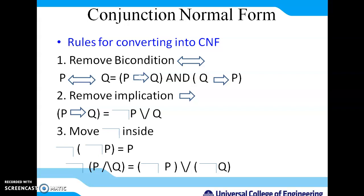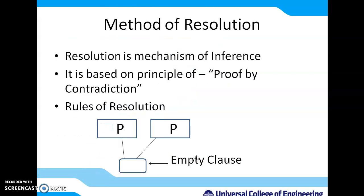Before proving a fact with the help of resolution, we have to convert the given propositional logic into Conjunctive Normal Form (CNF). The rules for CNF are: first, remove the biconditional — P biconditional Q becomes (P implies Q) AND (Q implies P). Second, remove implication — P implies Q becomes NOT P OR Q. Third, if there is negation, apply it inside using De Morgan's law, so NOT(P AND Q) becomes NOT P OR NOT Q. In resolution, we use proof by contradiction — we cancel terms that contradict each other, and if we receive an empty clause, whatever we assumed is wrong, and the fact is proved.